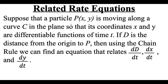Suppose we've got some particle P which is going to be represented using an x and a y value. It's moving along some curve C in our plane such that its coordinates x and y are both differentiable functions of time t. If capital D represents the distance from the origin to wherever our particle is located, then we can use the chain rule to find an equation relating the change in distance to the change in time, to dx/dt, and also to dy/dt.